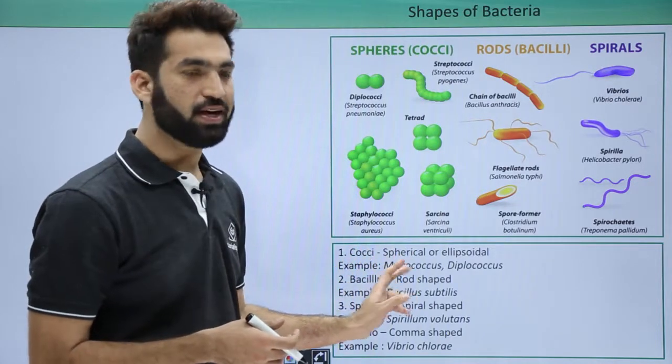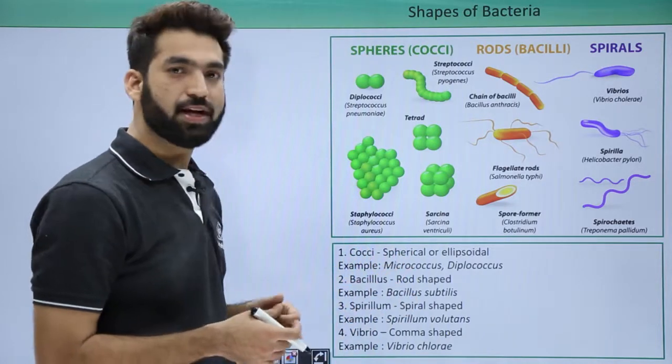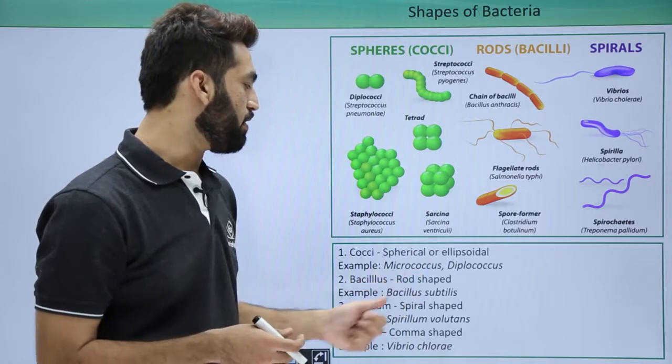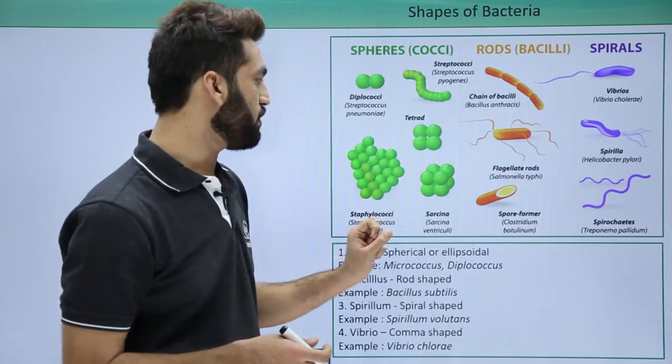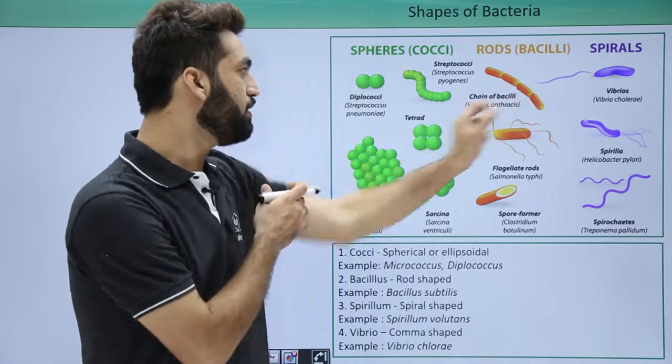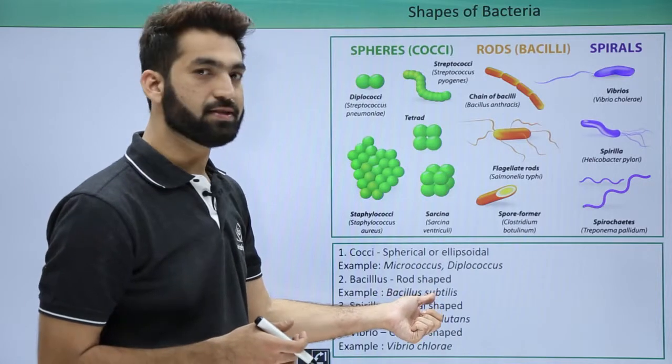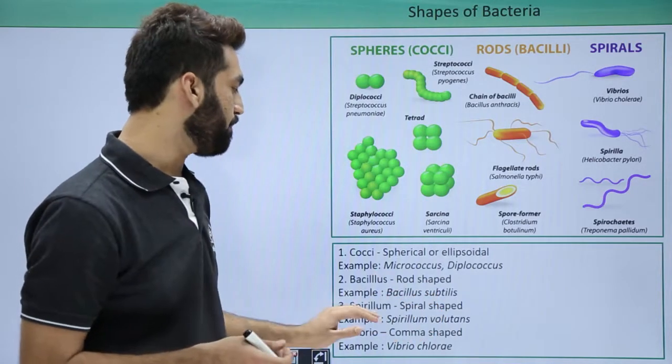The next shape is bacillus, which is rod-shaped. This is the widely common rod-shaped bacteria you can see here. Bacillus subtilis is an example of rod-shaped bacteria.